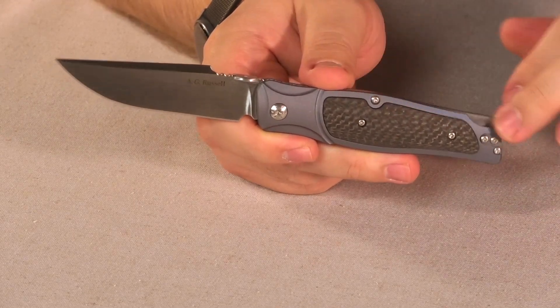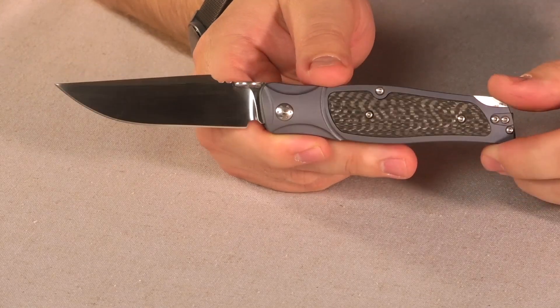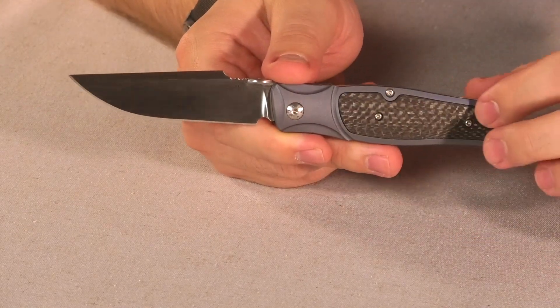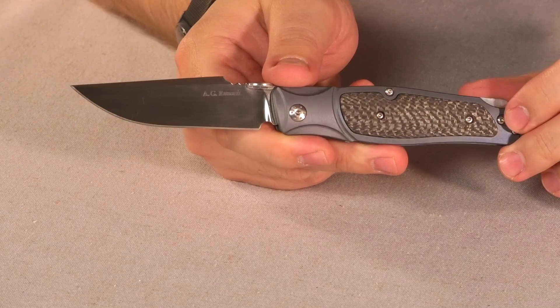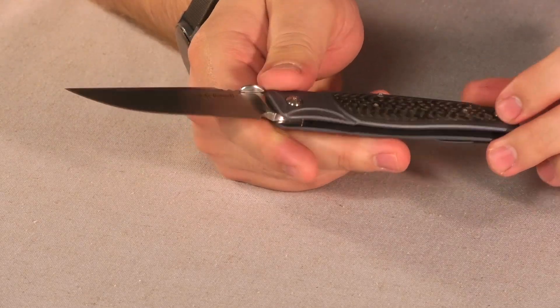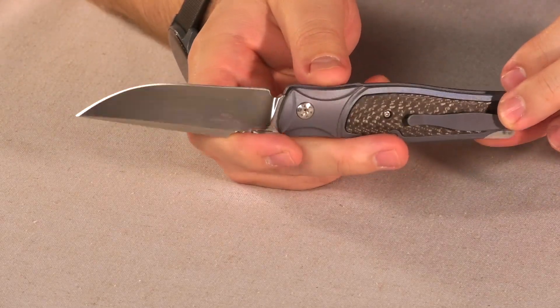Now we have an anodized blue titanium frame here with carbon fiber inlays. You can see it's definitely eye-catching carbon fiber. We take care in choosing our carbon fiber.